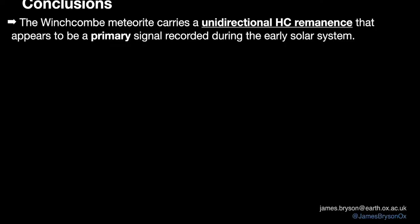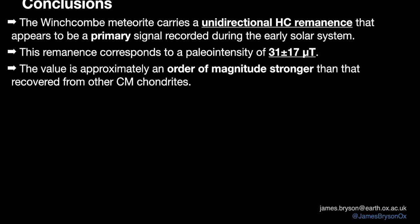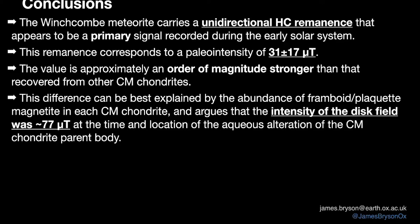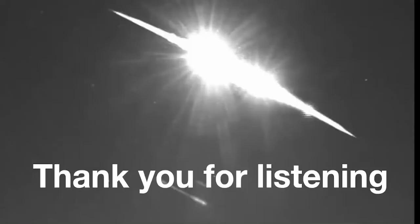So just to conclude, the Winchcombe meteorite carries a unidirectional high coercivity remanence that appears to be a primary signature from the early solar system. This corresponds to a comparatively strong magnetic field of 31 microtesla, which is about an order of magnitude stronger than we see recorded from other CM chondrites. And we can start to propose a way of explaining this difference by thinking about the mineralogy, and it suggests that the intensity of the magnetic field was strong in the carbonaceous reservoir in our solar system. And when we combine that with all the other meteorites that we've got so far, they're all consistently pointing towards this idea that the carbonaceous meteorites recorded a particularly strong magnetic field, which could most readily be explained by heterogeneity or some sort of pressure maxima inside of our protoplanetary disk, which could shed some really valuable light on environments that led to planet formation. Thank you everyone for listening.